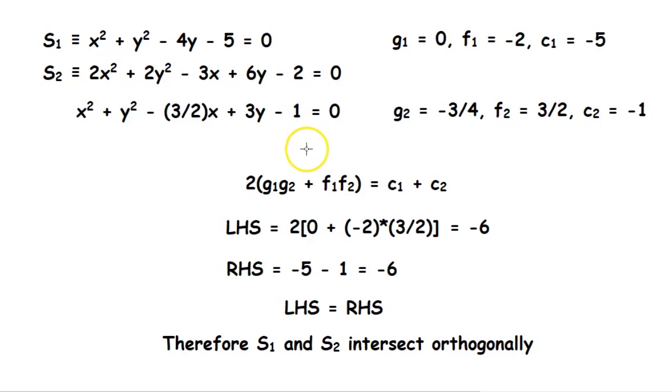So we know that when two circles intersect orthogonally, they obey the equation 2(g₁g₂ + f₁f₂) = c₁ + c₂. So now let's take the left hand side of this equation. So that will be 2(g₁g₂ + f₁f₂). Here we can find that g₁ = 0 since there is no x here. So f₁ will be -4 divided by 2, so that will give us -2.